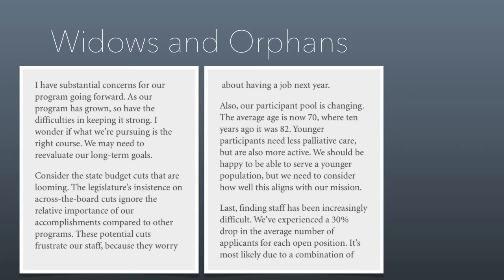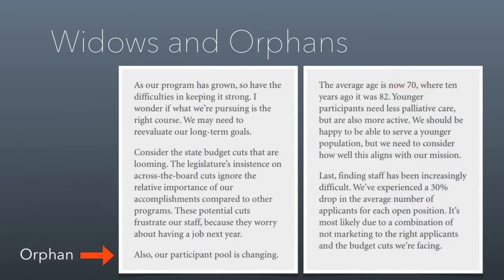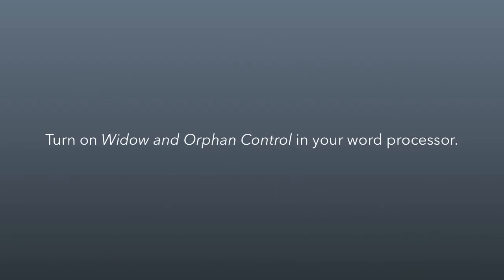Another formatting issue is widows and orphans. A widow is when just one line of a paragraph makes it onto the next page. An orphan is when one line of a paragraph stays on one page and the rest continues on the next. Widows and orphans interrupt reading — your topic sentence might get cut off from the rest of the paragraph, and visually they just look sloppy. The easiest fix is to turn on widow and orphan control in your word processor. In Microsoft Word it's on by default, but check practicaltypography.com if you need instructions.